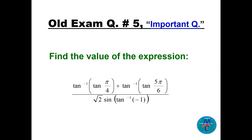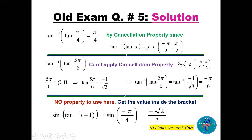Question five: find the value of tan⁻¹(tan(π/4)) plus tan⁻¹(tan(5π/6)), divided by some value. The cancellation property tan⁻¹(tan x) = x applies when x is in (−π/2, π/2). So tan⁻¹(tan(π/4)) = π/4 directly. For 5π/6, it's outside the range, so we evaluate tan(5π/6) — it's in quadrant 2, giving −1/√3. Then tan⁻¹(−1/√3) = −π/6.